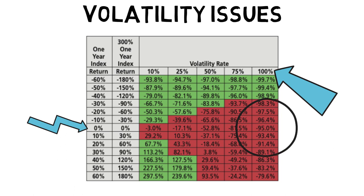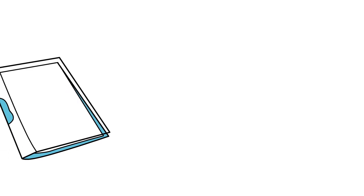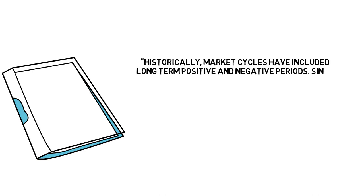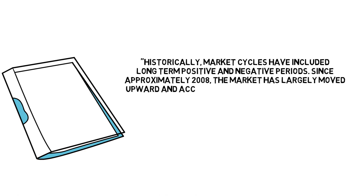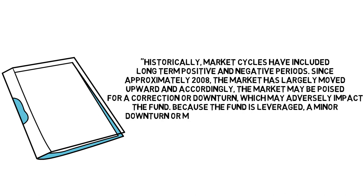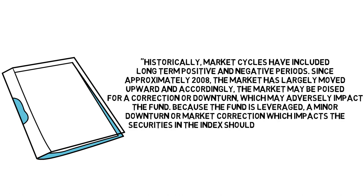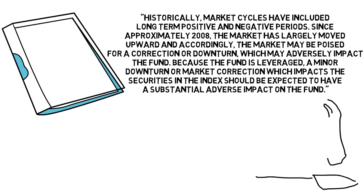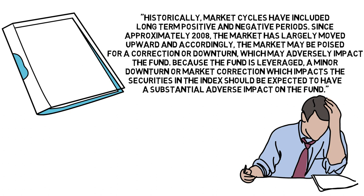This amount varies according to this chart, and certain volatility figures could easily wipe out decades of growth. This fund has been fortunate to never have experienced these events over the past decade, but even its founders are printing outright that this past decade should not have been a template for the future, saying quote: Historically, market cycles have included long-term positive and negative periods. Since approximately 2008, the market has largely moved upwards, and accordingly the market may be poised for a correction or downturn which may adversely affect the fund. Because the fund is leveraged, a minor downturn or market correction which impacts the securities in the index should be expected to have substantial adverse effects on the fund.